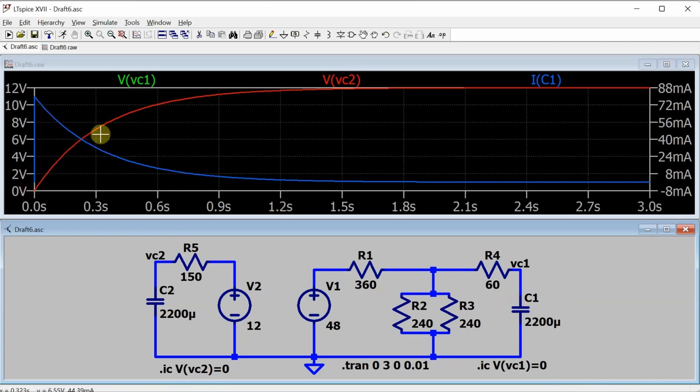And same thing's going to happen with this current through the capacitor. It's in blue for the current through capacitor 1, and if I click on capacitor 2 here, we get a lighter blue following the exact same curve.